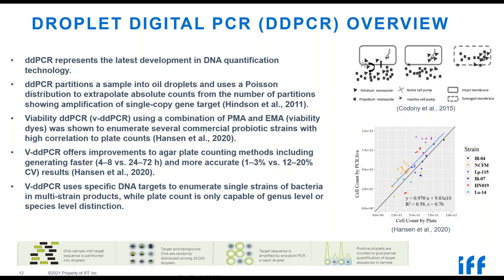VddPCR offers significant improvements over agar plate counting, including faster time to results — four to eight hours versus 24 to 72 hours for plate count methods — and improved accuracy. In a paper by Sarah Hanson and colleagues, method variability was found to be one to three percent with droplet digital PCR, compared to 12 to 20 percent with plate count. The study also found good correlation between our viable digital PCR technique and plate count across a number of our probiotic strains.